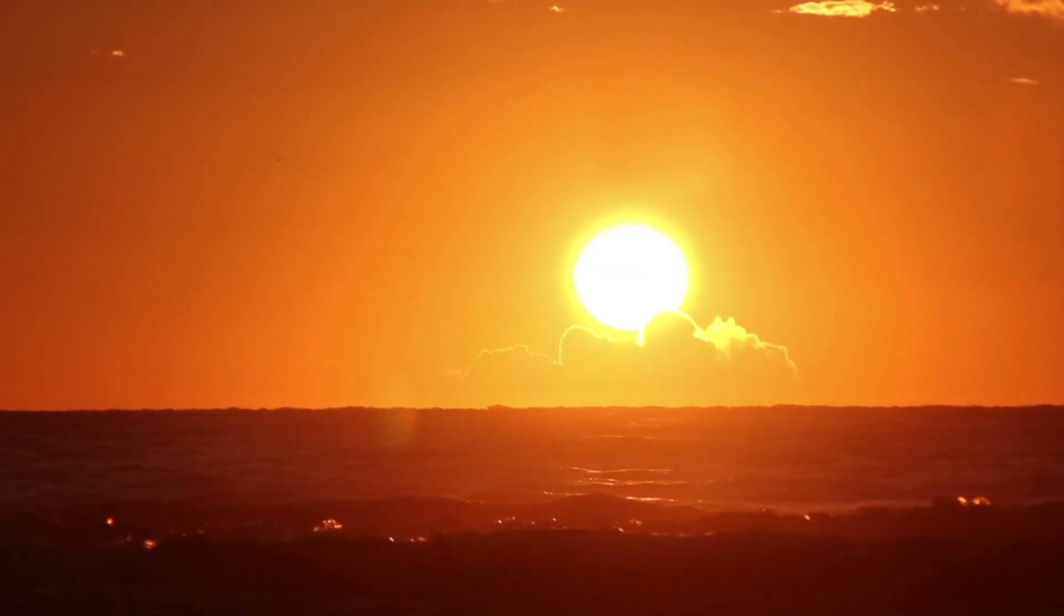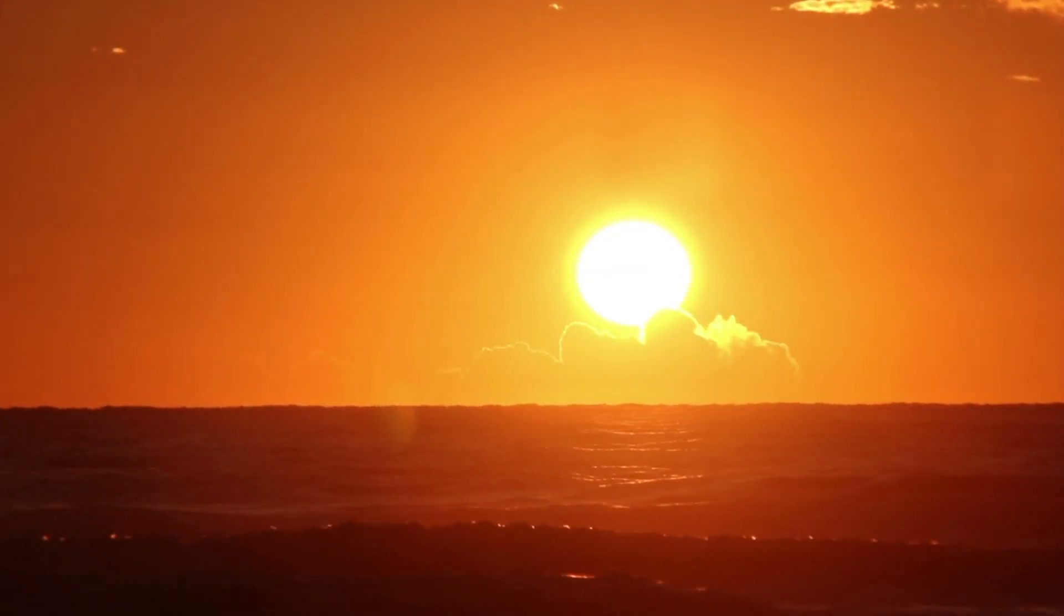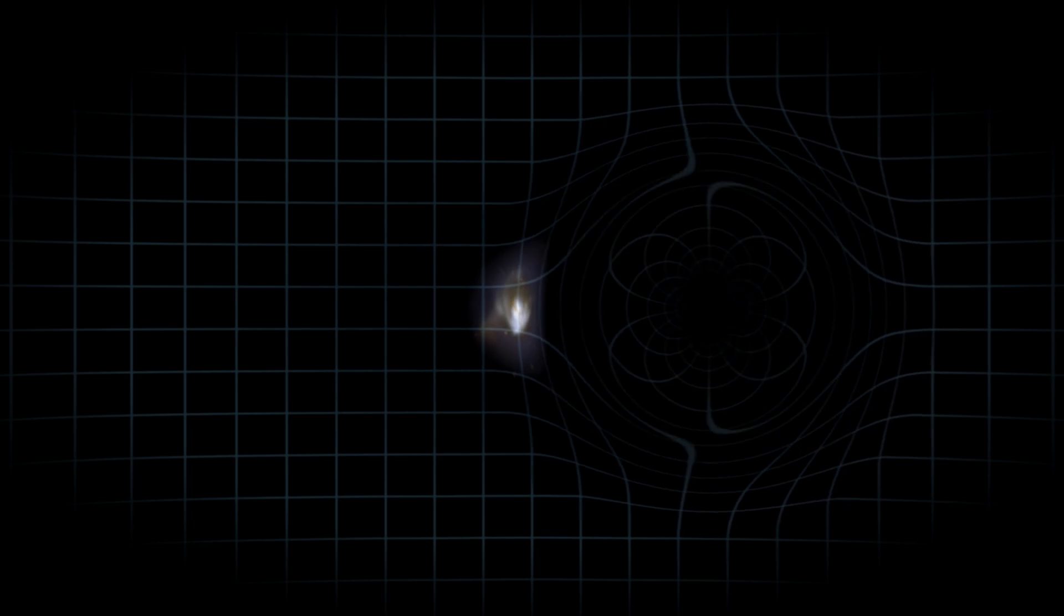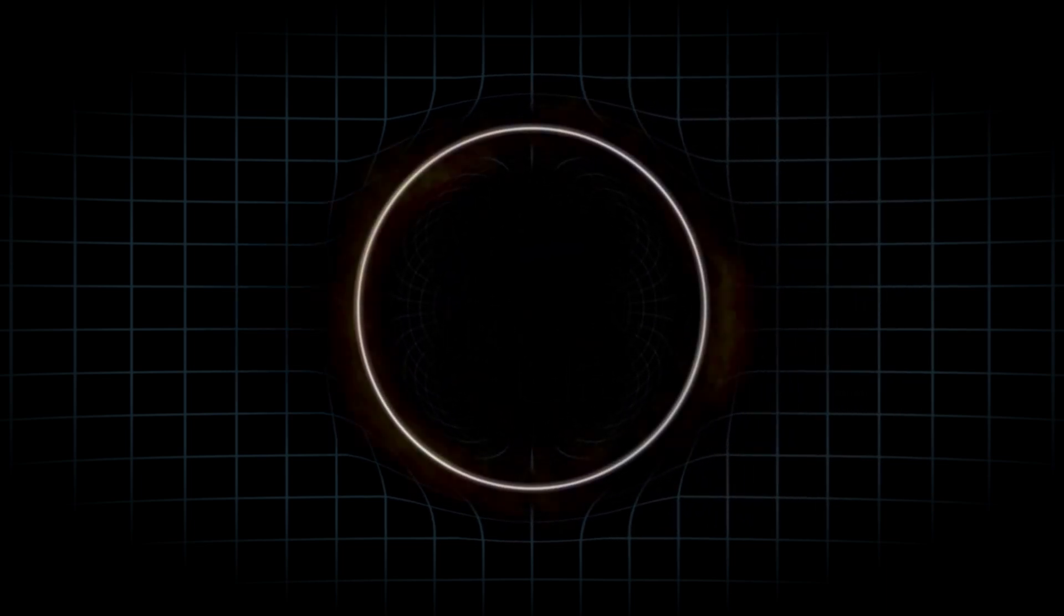But general relativity goes even further, predicting that the path of light can also be affected by this curvature. This means that massive objects can bend the path of light, creating an effect called gravitational lensing, which has been observed by astronomers many times.